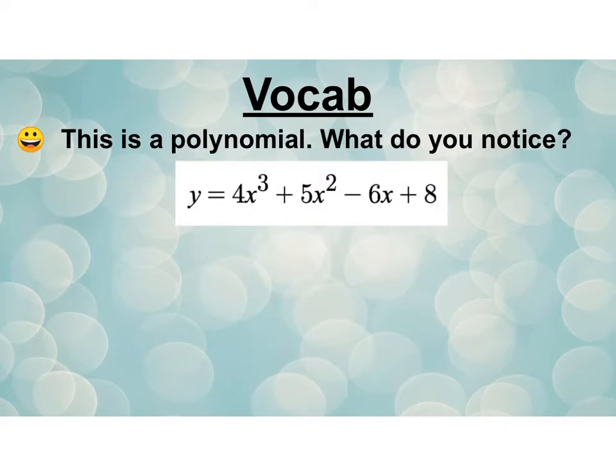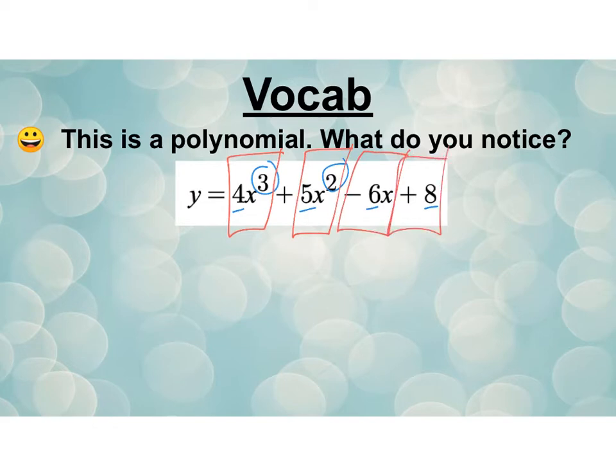So this is a polynomial. What do you notice? Maybe you notice there's certainly a lot of numbers. There's some plus and minuses. So all of these numbers before the variables and this one by itself, those are called coefficients. The three and the two are exponents. This whole group is called a term. So we have four terms. Terms are separated by plus and minus signs. So there's a lot going on there. Let's get a little more specific.